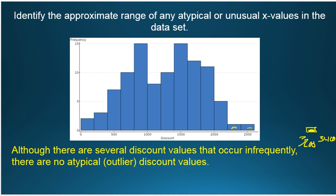So the response to this third step, although there are several discount values that occur infrequently, there are no atypical or outlier discount values.